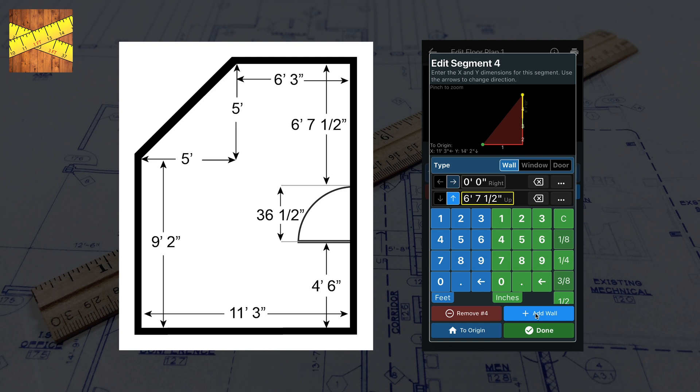To add a wall going left, click the Add Wall button, then the left arrow. Now enter 6 feet 3 inches.